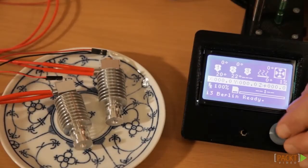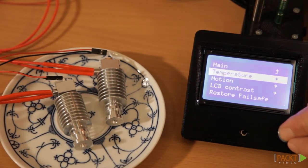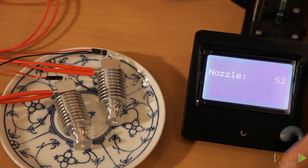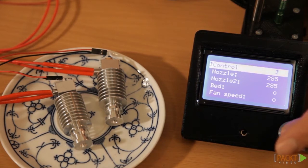Lay the hotend on something heat resistant, a porcelain plate for example. Turn on the printer. Heat up the extruder to 285 degrees or more and wait a few minutes.